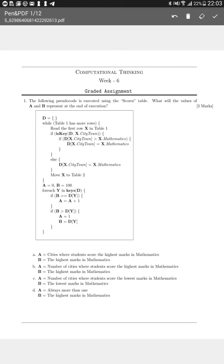What does the if statement say? It says if isKey(D, X.citytown). From the lecture videos we've seen, we know that isKey is basically a function that checks if this particular city or town is already present in the dictionary D.